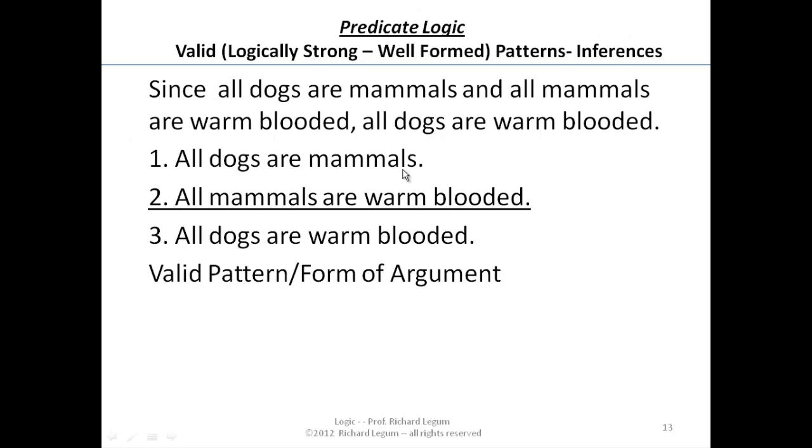All dogs are mammals. All A's are B's, A's being dogs, B's being mammals. All mammals, which you know B's, are something else, C's. So we get a premise all B's are C's.